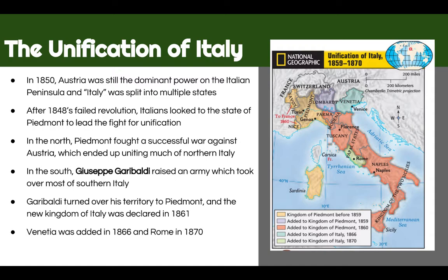In the north, Camillo de Cavour leads Piedmont in a war against Austria, which united much of northern Italy. In the south, Giuseppe Garibaldi raised an army which took over most of southern Italy, and then they come together and unite. A new Kingdom of Italy is established in 1861. Venetia was added in 1866 and Rome in 1870. For the first time since basically the Roman Empire, we see a united Italy in this peninsula.